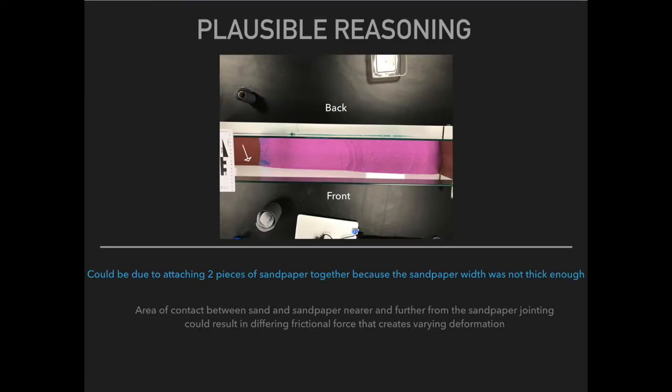Let's now look at a plausible reason for the difference in observations on the two sides. As the same sandpaper width was not long enough to cover the breadth of the sandbox, two pieces of sandpaper were attached together and used as the base. Therefore, the area of contact between sand and sandpaper might differ, causing differing frictional forces and resulting in a variance in deformation.